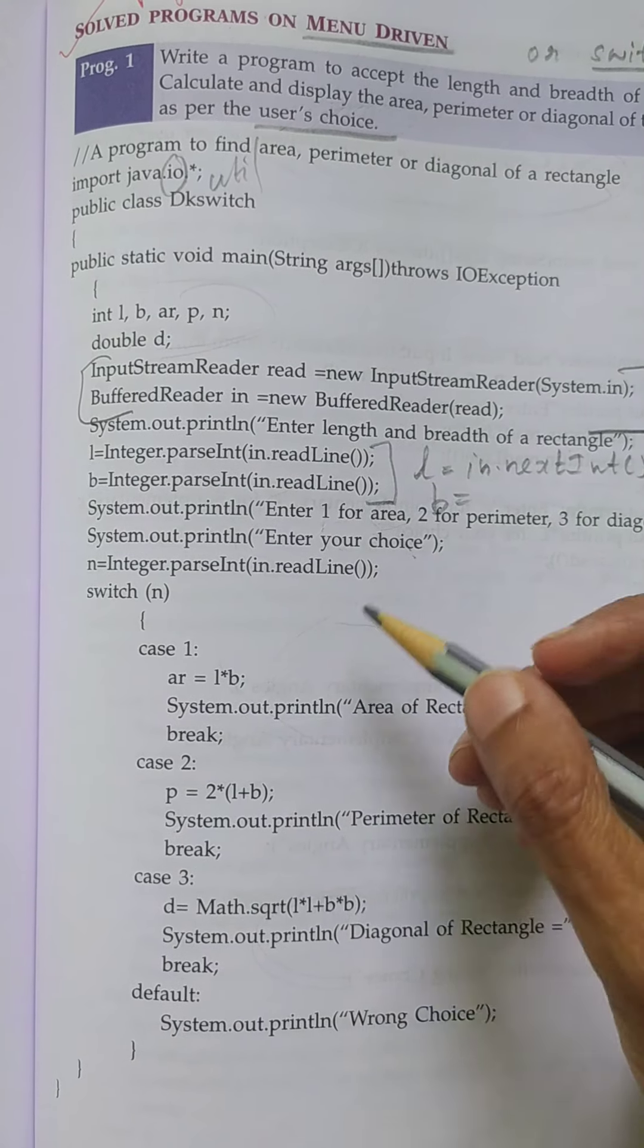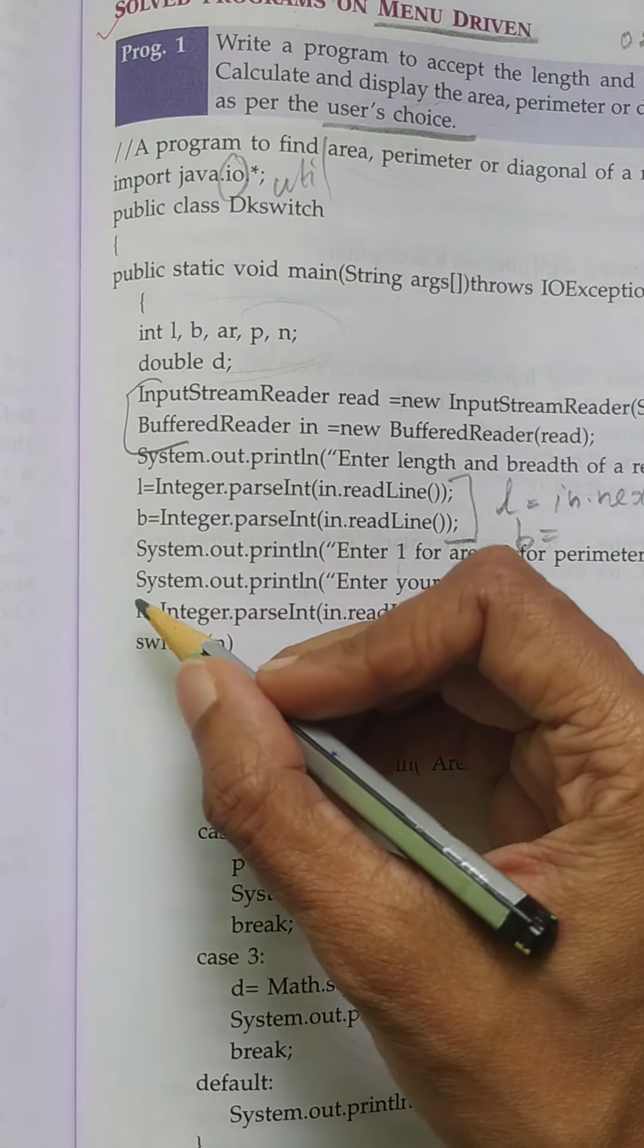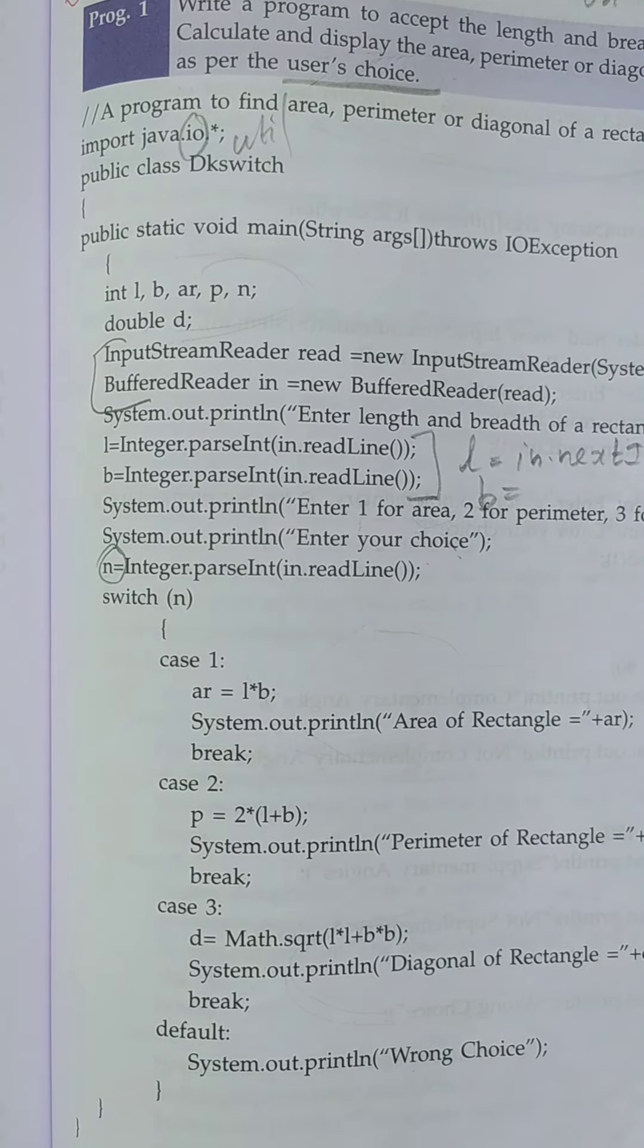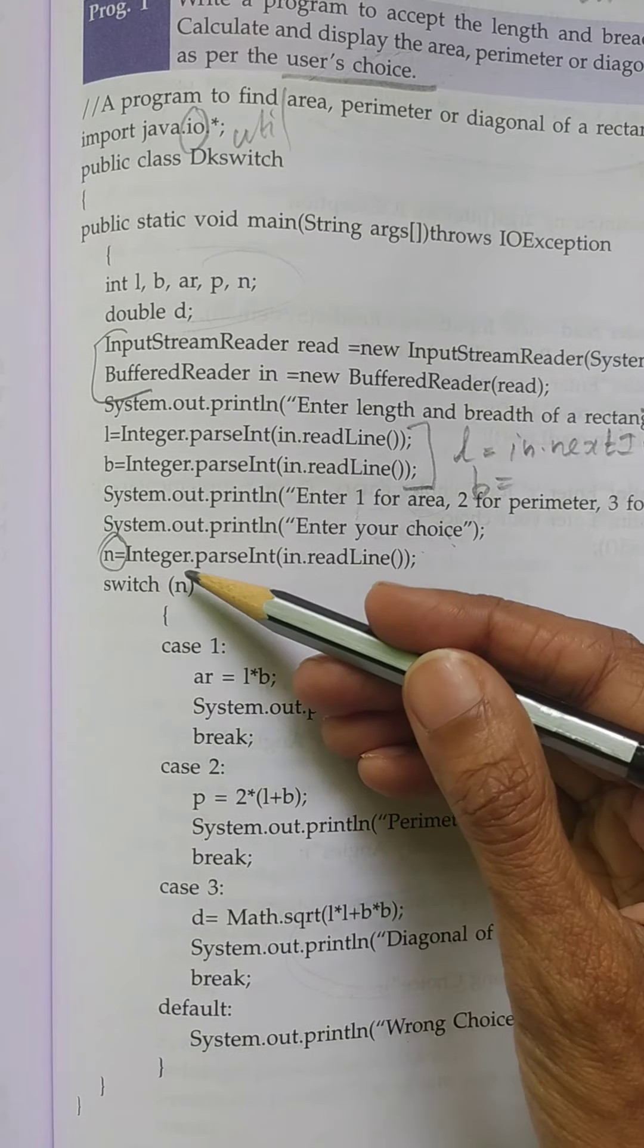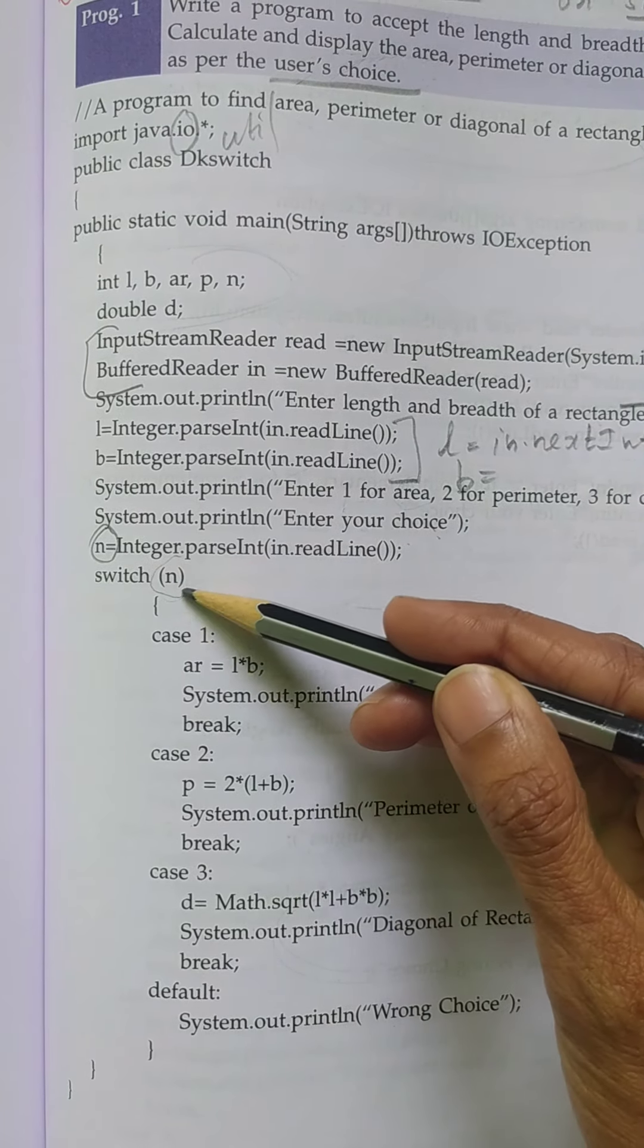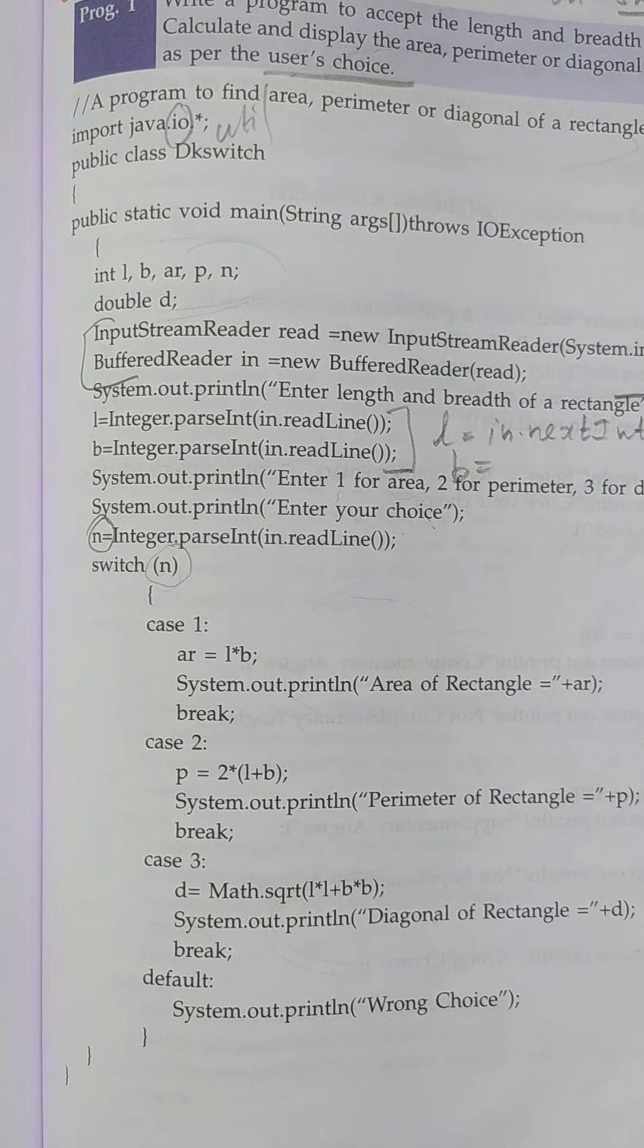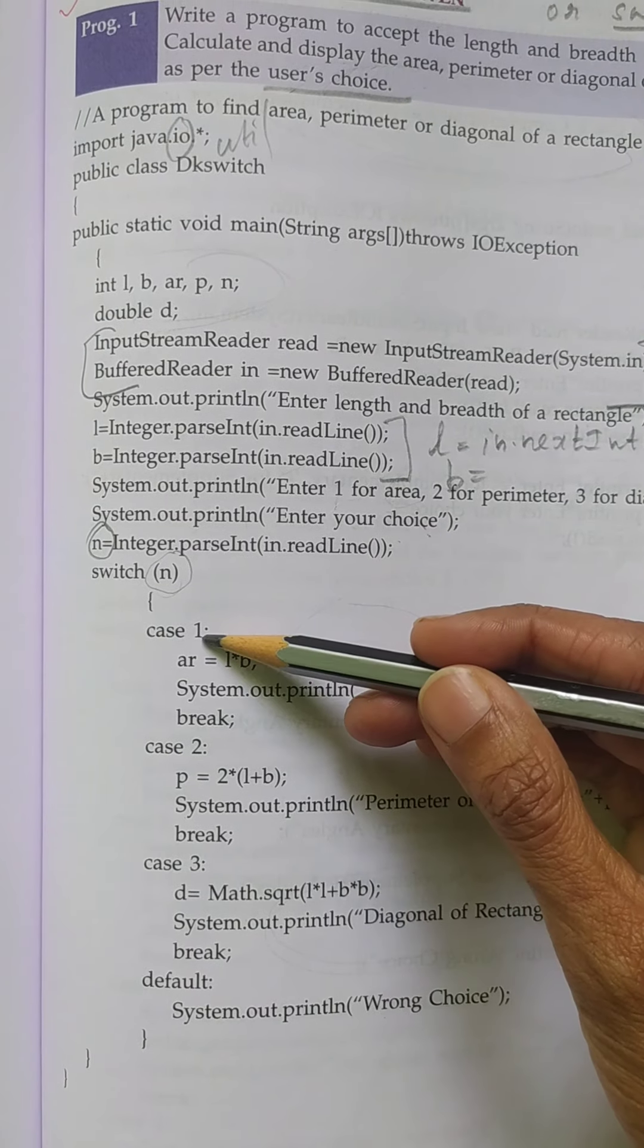That choice, the user can press any of the cases, right? So that choice is stored in n variable. We have to switch the cases. That means inside the bracket you have to give that variable so that each time user can enter any cases. So here, case 1.